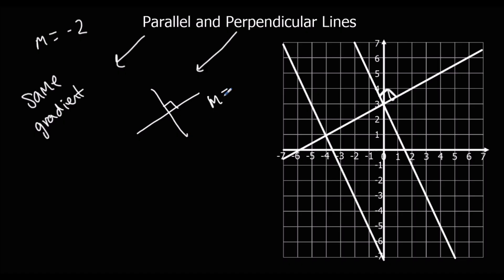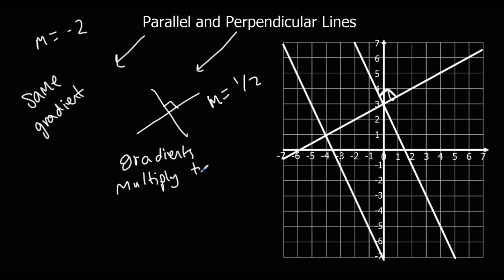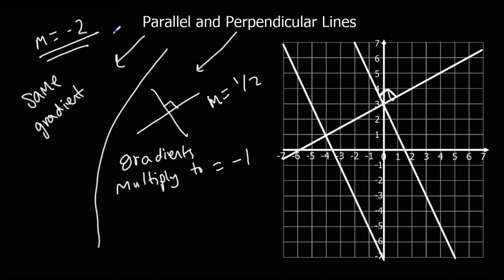So the gradient of the perpendicular line is a half. And what we're going to find is this relationship between the parallel and perpendicular gradients — gradients multiply to give minus 1. So the original gradient multiplied by the perpendicular gradient equals minus 1. So it kind of flips and minuses. If the gradient is 2, it flips over to become 1 over 2 and it changes the sign. Any negative is always going to pair with a positive, so if it's positive, the perpendicular is negative; if it's negative, the perpendicular will be positive.